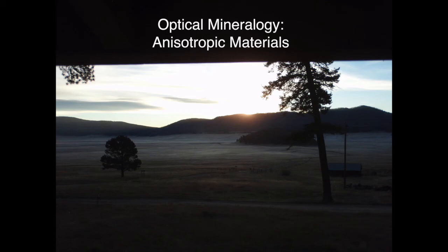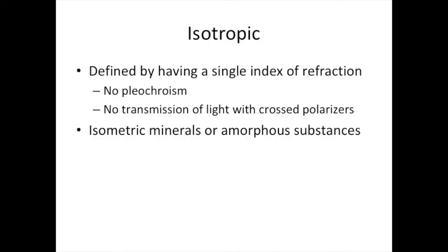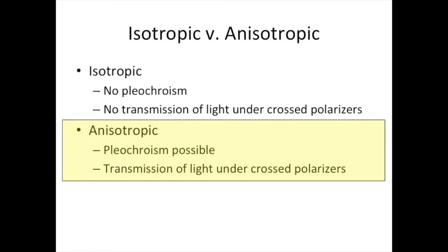Hi there everybody. This is continuing a series of videos on optical mineralogy and today we're going to talk about anisotropic materials in depth. Last time we talked about isotropic materials — the important take-homes are that they are defined by a single index of refraction, which prevents them from exhibiting pleochroism or the transmission of light with cross polarizers. Anisotropic materials, by contrast, are defined by multiple indices of refraction, which allows them to exhibit pleochroism and transmit light under cross polarizers.